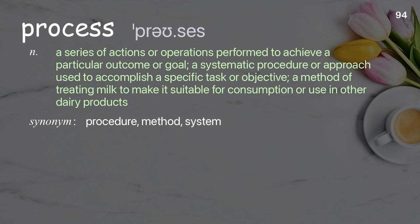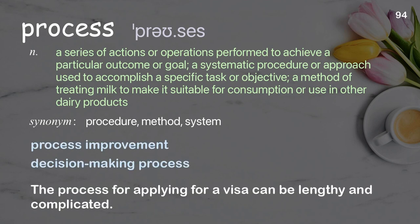Process: a series of actions or operations performed to achieve a particular outcome or goal; a systematic procedure or approach used to accomplish a specific task or objective. Examples: process improvement; decision-making process. The process for applying for a visa can be lengthy and complicated.